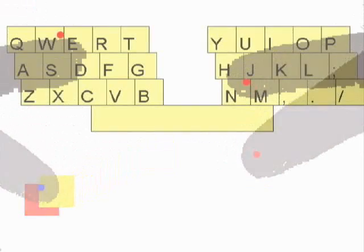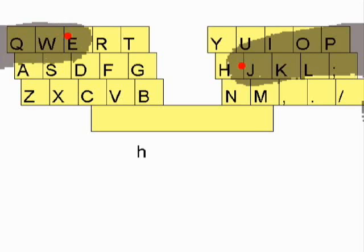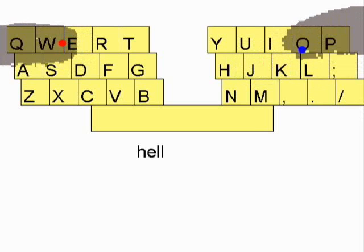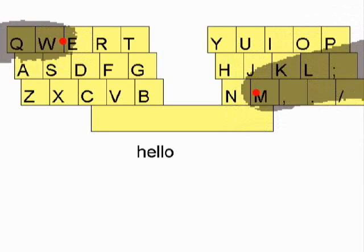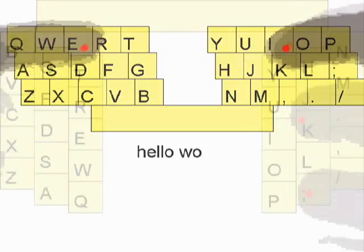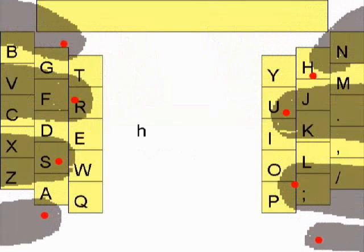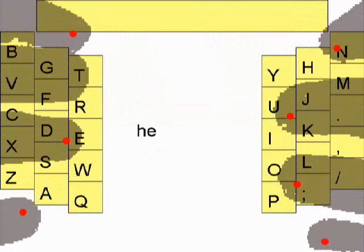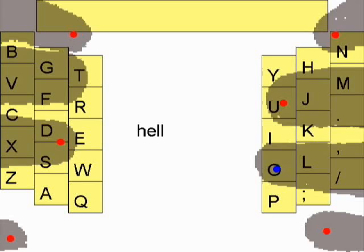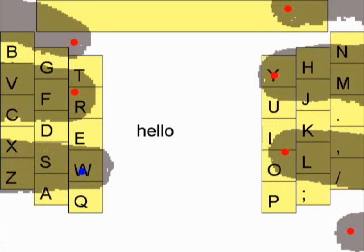Next, we examined text entry. A traditional soft keyboard can be used with two touch points. Because this does not leverage the other fingers, however, input is slow. To utilize additional fingers, we modified the keyboard so that the relative positions of the keys and fingers would be maintained for touch typists. This layout allows more fingers to reach the keys while leveraging previous learning.